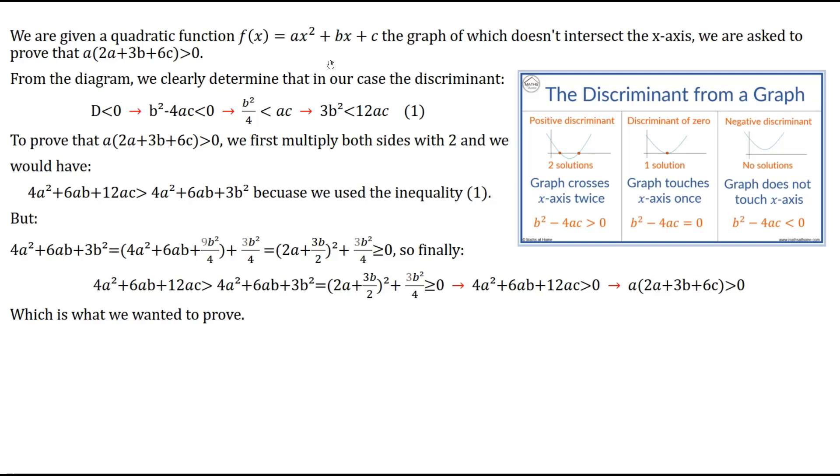So from the diagram over here, I have given a simple diagram with three graphs. When the discriminant is greater than zero, we have two solutions. When the discriminant is equal to zero, we have one solution. And when the discriminant of the second degree equation is negative, we do not have any solutions, so it doesn't intersect the x-axis anywhere.